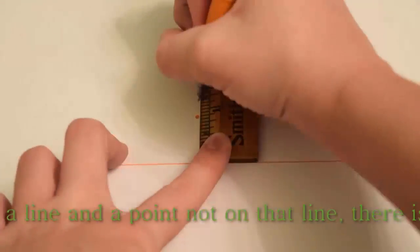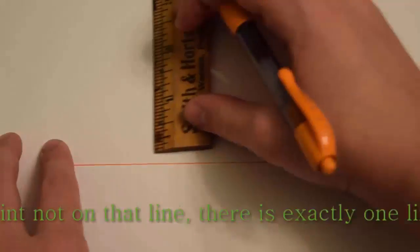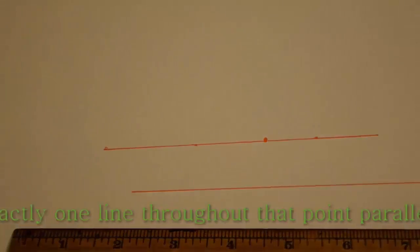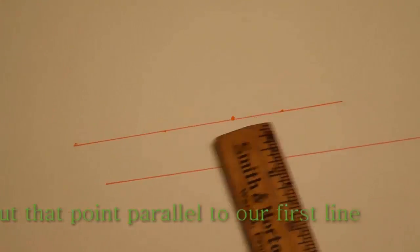And here's the fifth. Given a line and a point not on that line, there is exactly one line through that point parallel to our first line. In other words, there is exactly one line through that point that will never touch the other when extended infinitely.